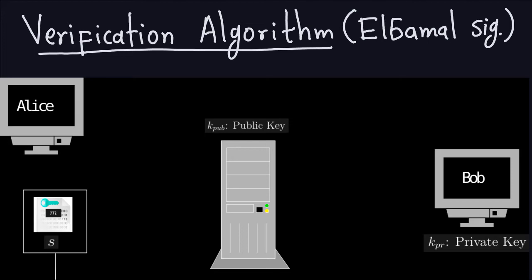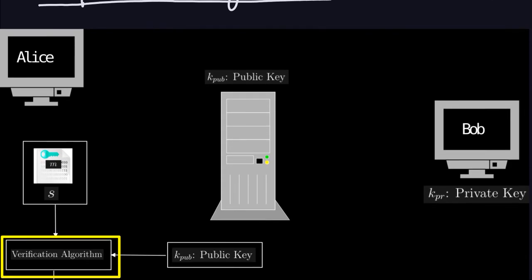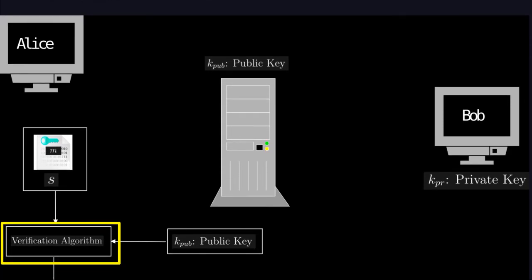In the last video we talked about the process of signing the message. In this case, this is from the point of view of Alice, that's the one that's going to check whether or not the signature is valid.